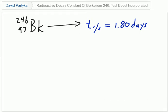Here, we are asked to determine the decay constant for berkelium-246, which has an atomic number of 97, a mass number of 246, and undergoes alpha decay with a half-life of 1.80 days. With that information in mind, we're asked to determine the decay constant k.